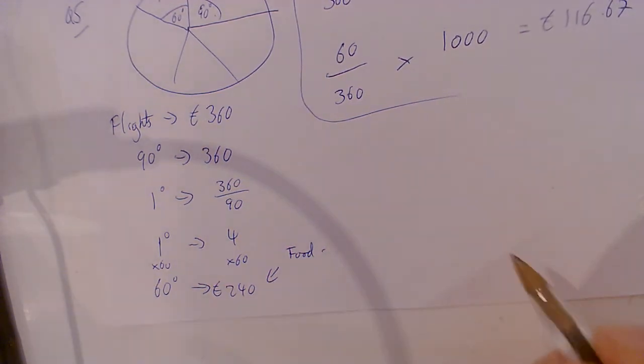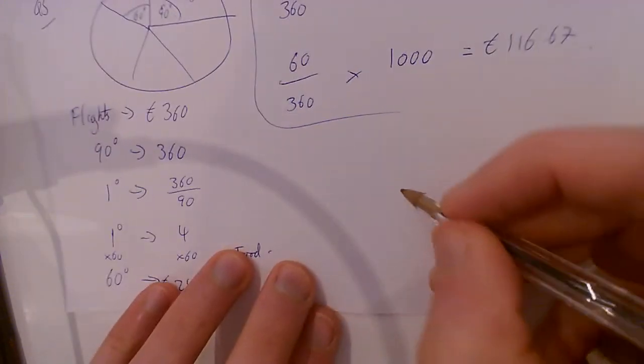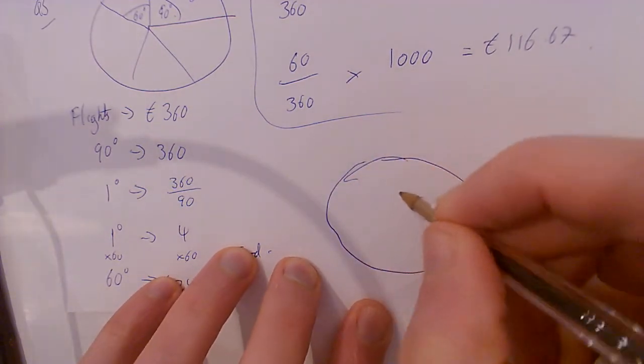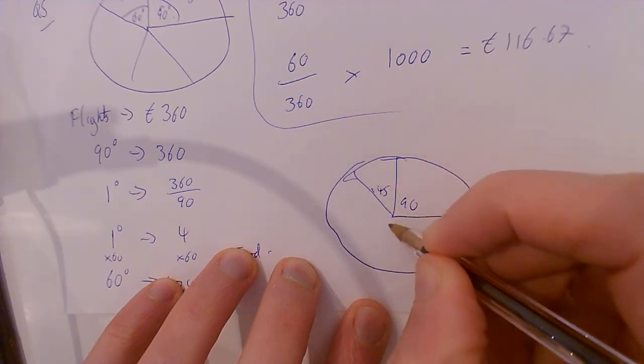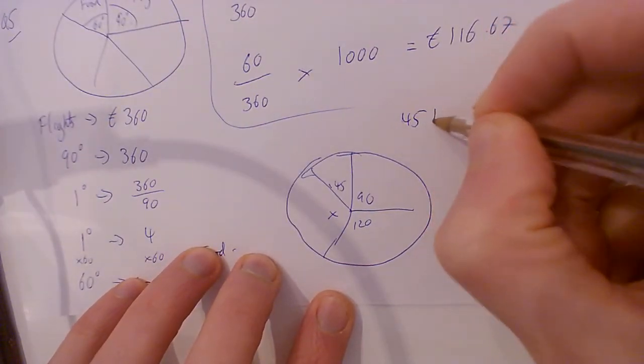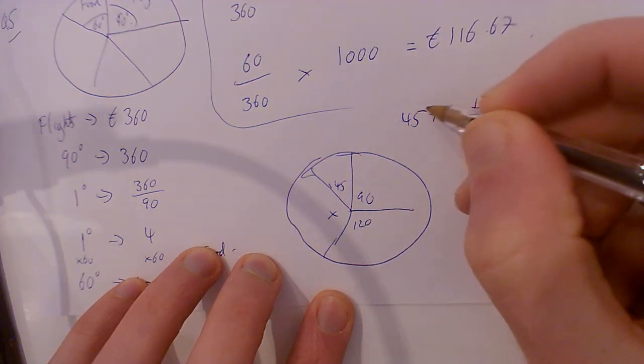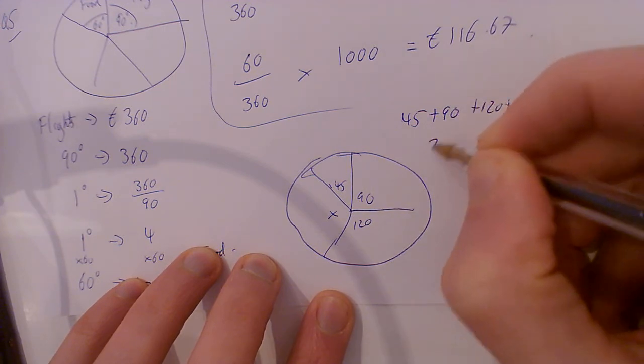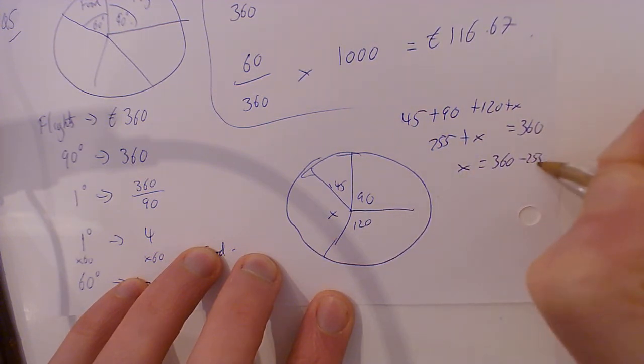Now if we're going one further and one backwards... if I have the whole degrees here: this is 90, this is 45, this is x, and this is 120. Well, they all have to add up to 360. 45 plus 90 plus 120 plus x equals 360. Add them up: that's 255 plus x equals 360. So x equals 360 minus 255, x equals 105 degrees.